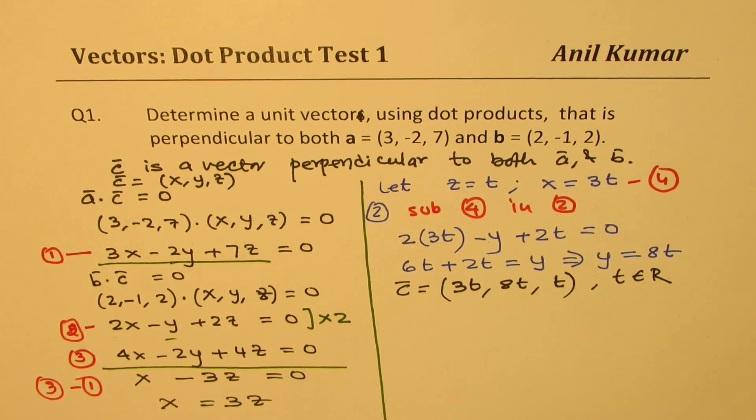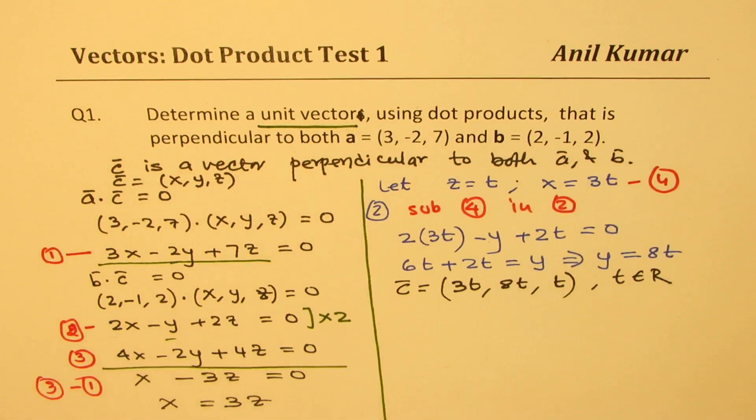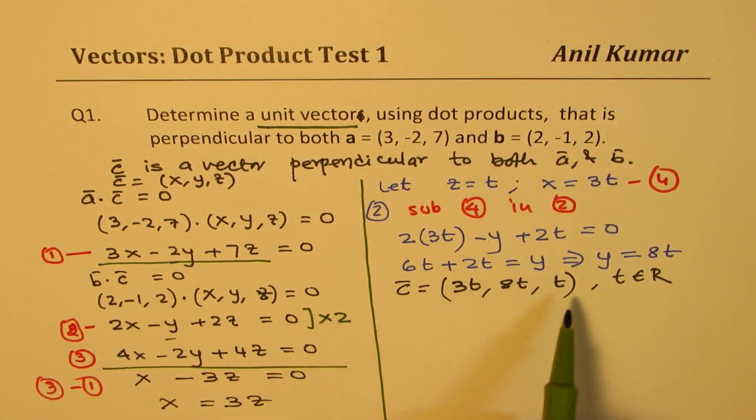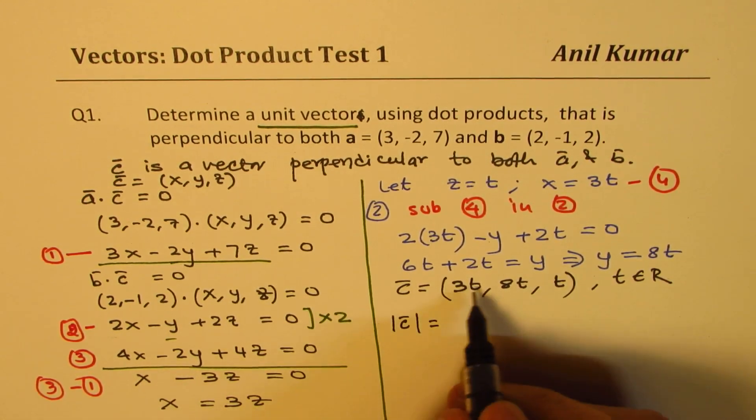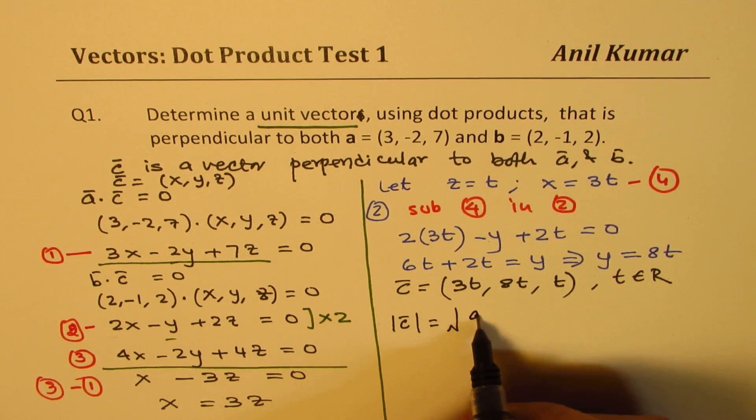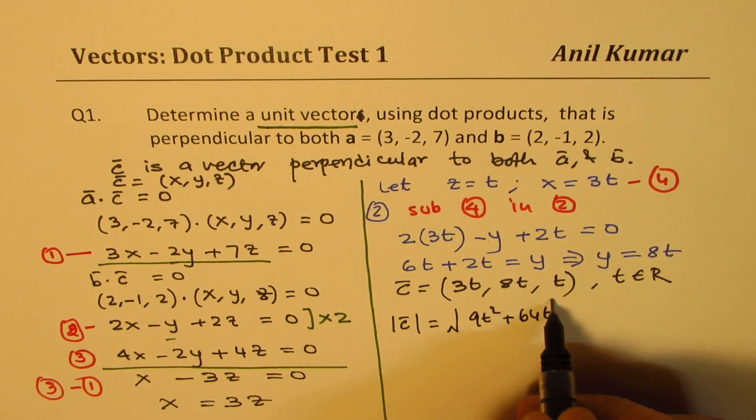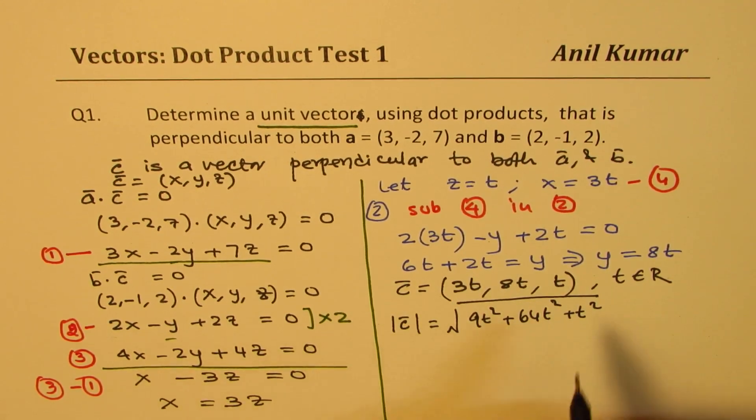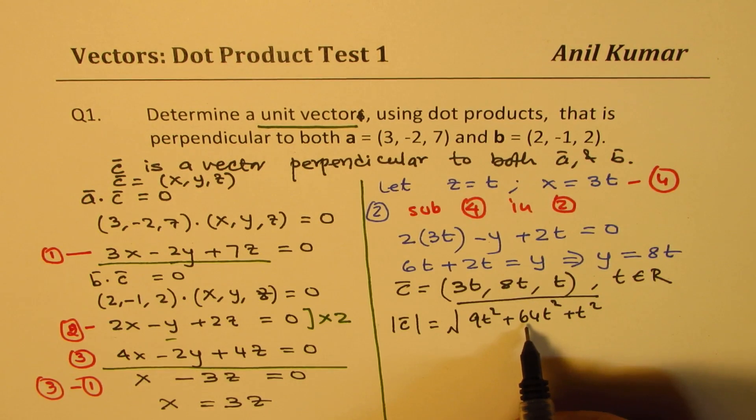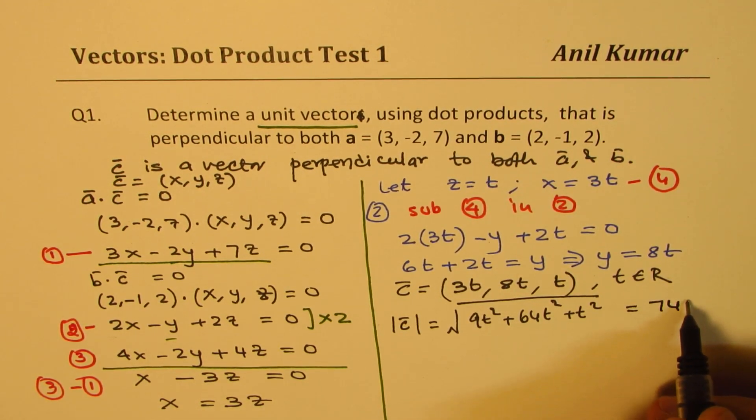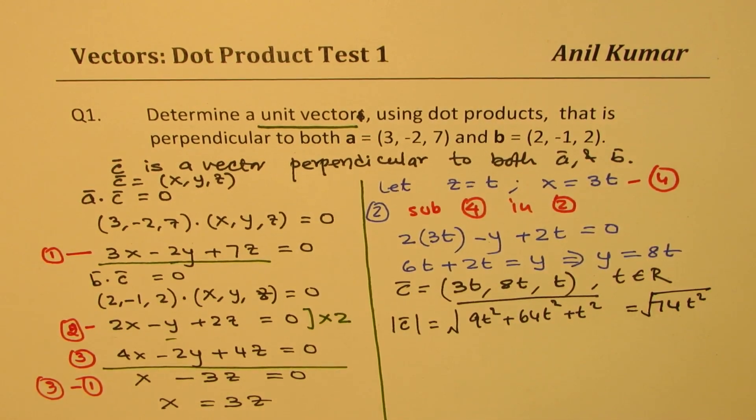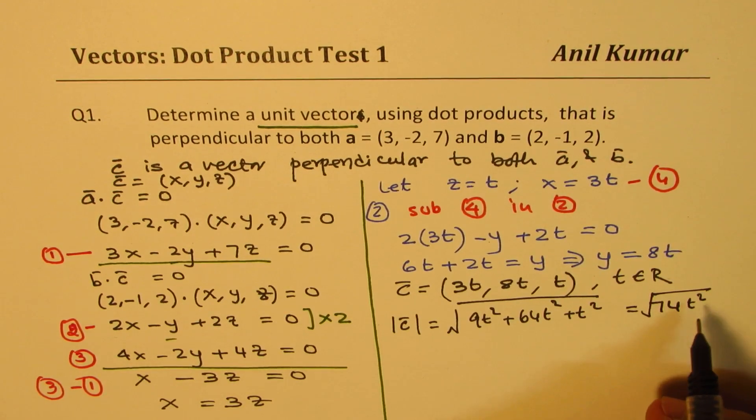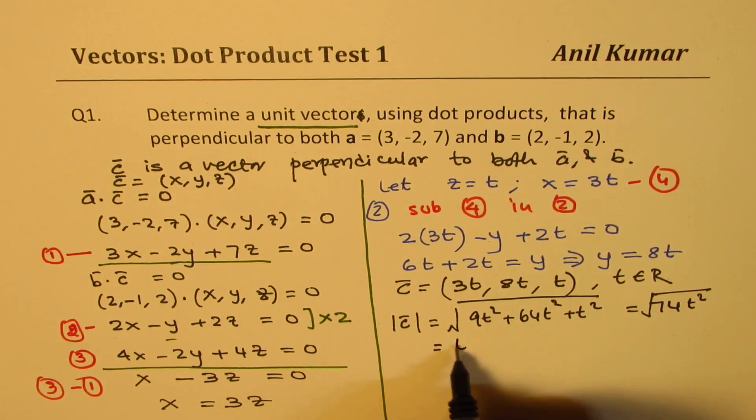In this particular question, we are more interested in finding a unit vector that is specific. That means I have to divide this by its magnitude. So what is going to be the magnitude? Well, the magnitude will be, we'll do square root. Let's find the magnitude of this c. So that is equal to 9t² + 64t² + t². So we'll do squares of them and add data. So 9 plus 10 and then plus 1 is 10, 64 plus 10 is 74t² square root. So that becomes the magnitude for us, which is basically t, which could be written as t√74.